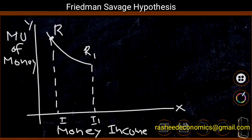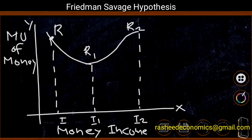But if income increases from I1 to I2, the marginal utility of money increases from I1R1 to I2R2. That is, in the income range from I1 to I2, marginal utility of money is increasing. At this stage, since marginal utility of money is increasing, people will have a tendency to take risk or indulge in gambling.